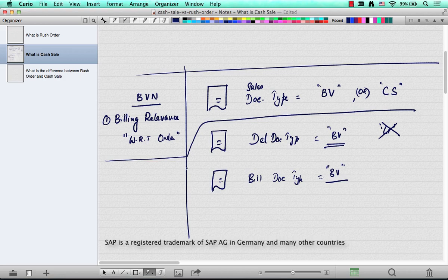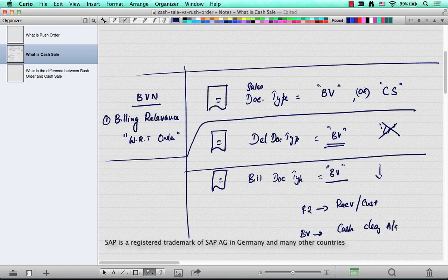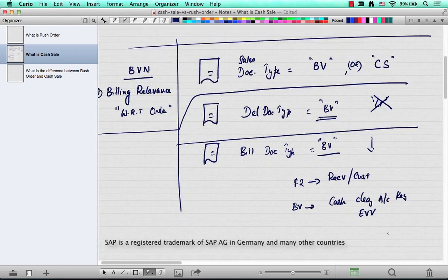Now, the second piece of configuration is here at the billing document level. So in the billing document, because the cash account posting is different between standard invoice F2 and BV. So in F2, the receivables are hit and customer recon is hit directly. Okay, but in BV, there is a special key called cash clearing account key. It's called EVV.